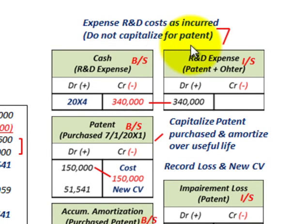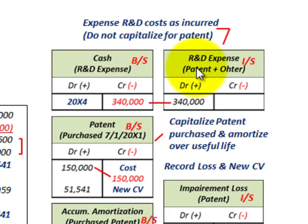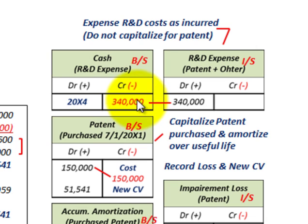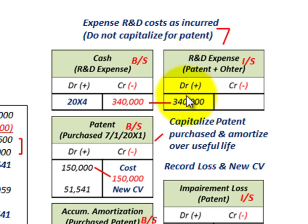Now let's look at how we'd record this patent on our balance sheet and income statement — the impairment, amortization, and capitalization. Remember, we had $340,000 in R&D costs incurred during 20X4. Even if some of those research and development costs relate to this patent, we would still not be capitalizing any of those amounts against the patent. R&D expenses are expensed as incurred. So we'd credit cash $340,000 and debit R&D expense $340,000, even if some went against the patent.